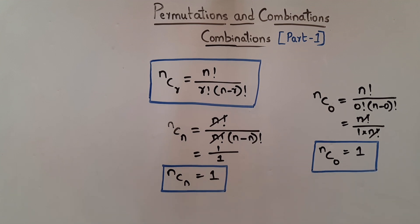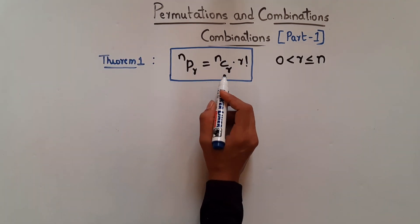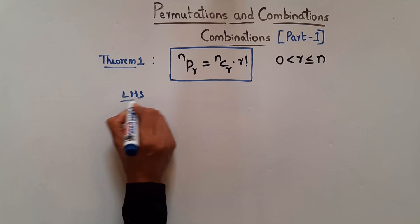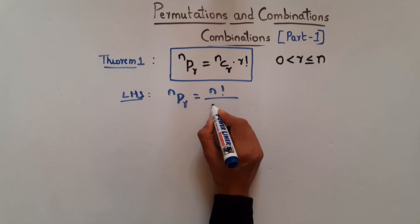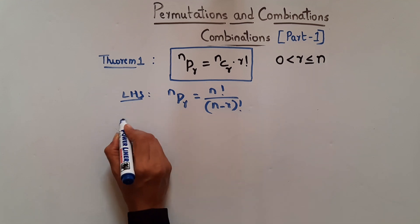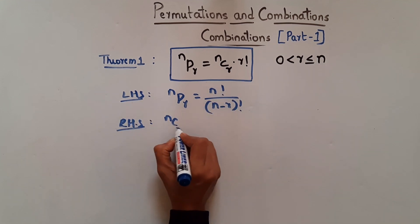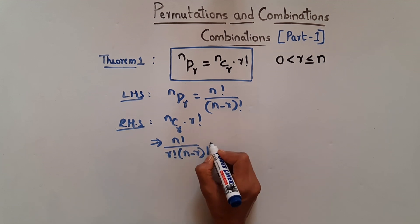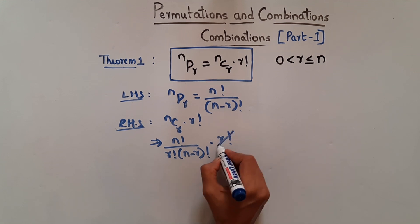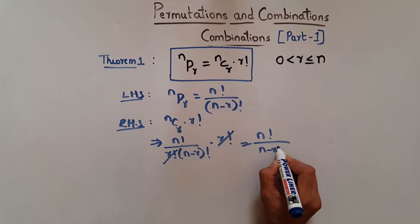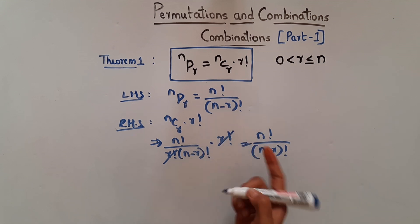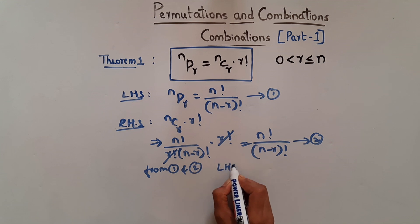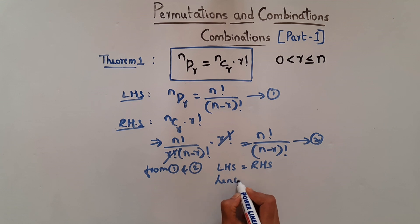Theorem 1 states: nPr = nCr × r!, where 0 < r ≤ n. Taking LHS: nPr = n! / (n−r)!. Taking RHS: nCr × r! = [n! / (r! × (n−r)!)] × r! = n! / (n−r)!. Since LHS equals RHS, the theorem is proved.